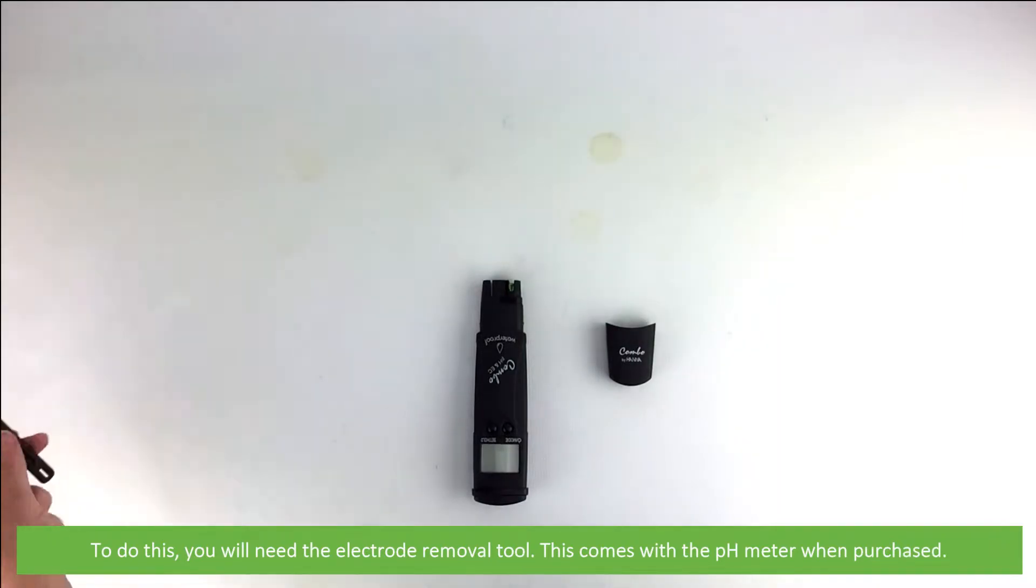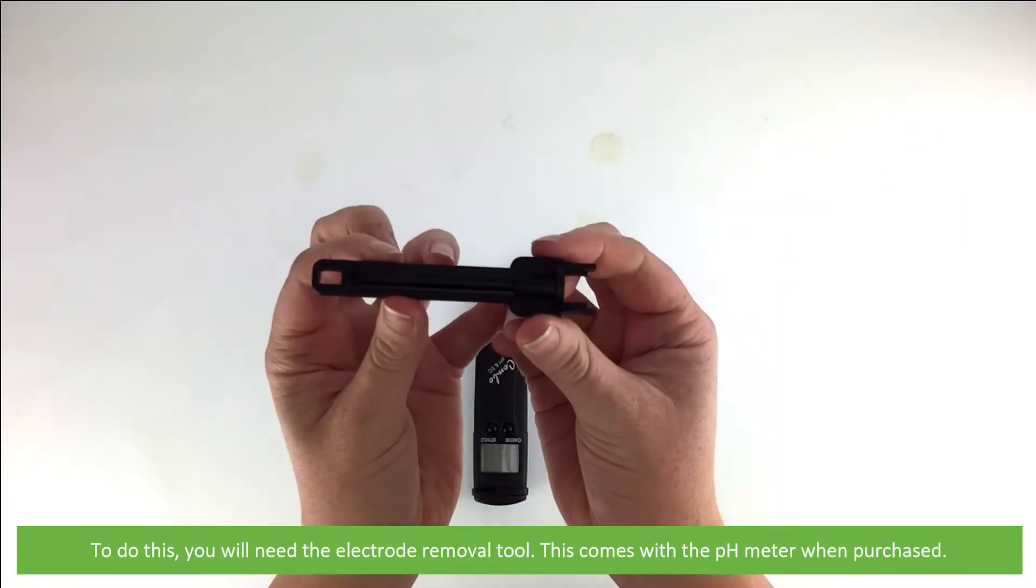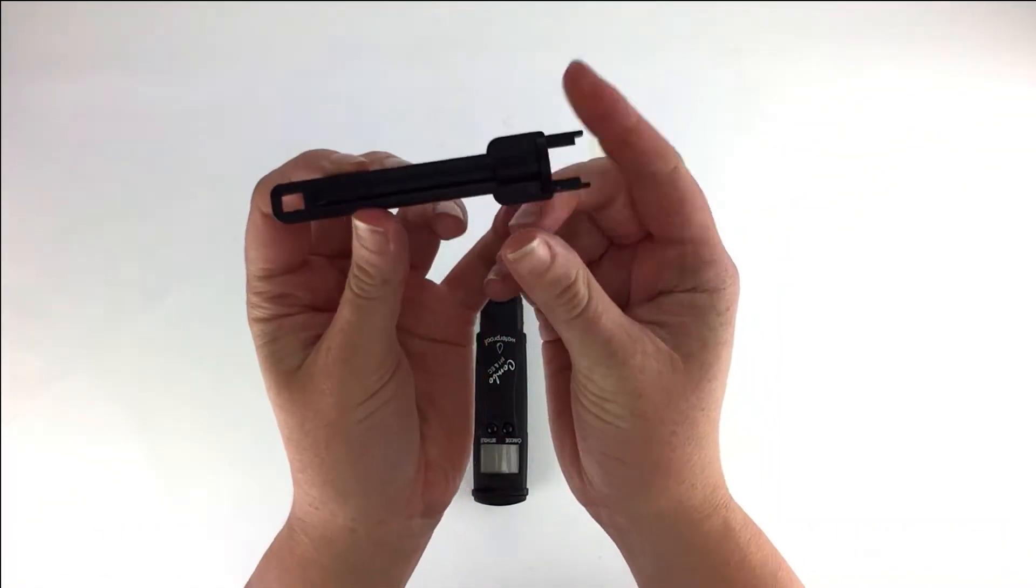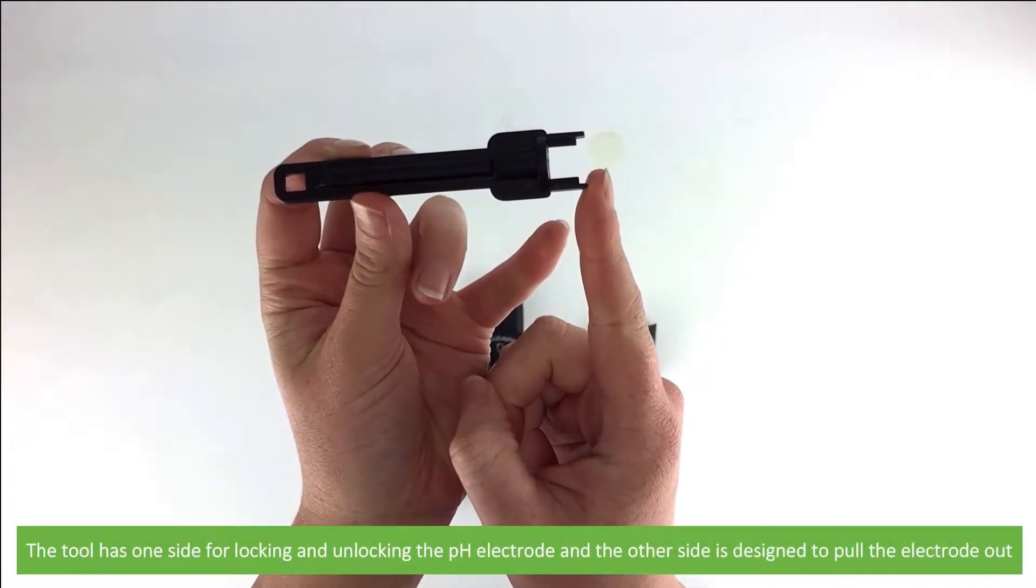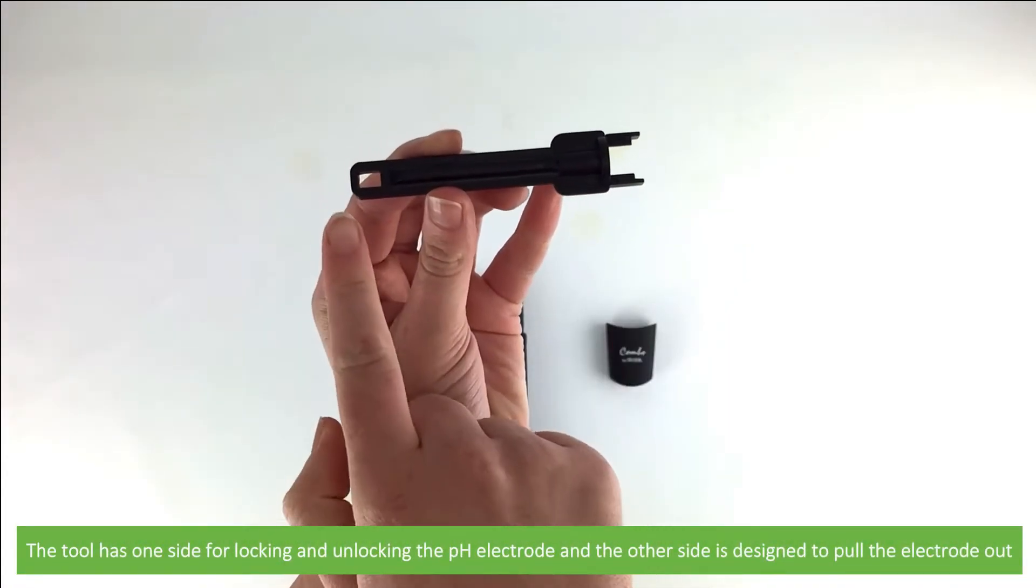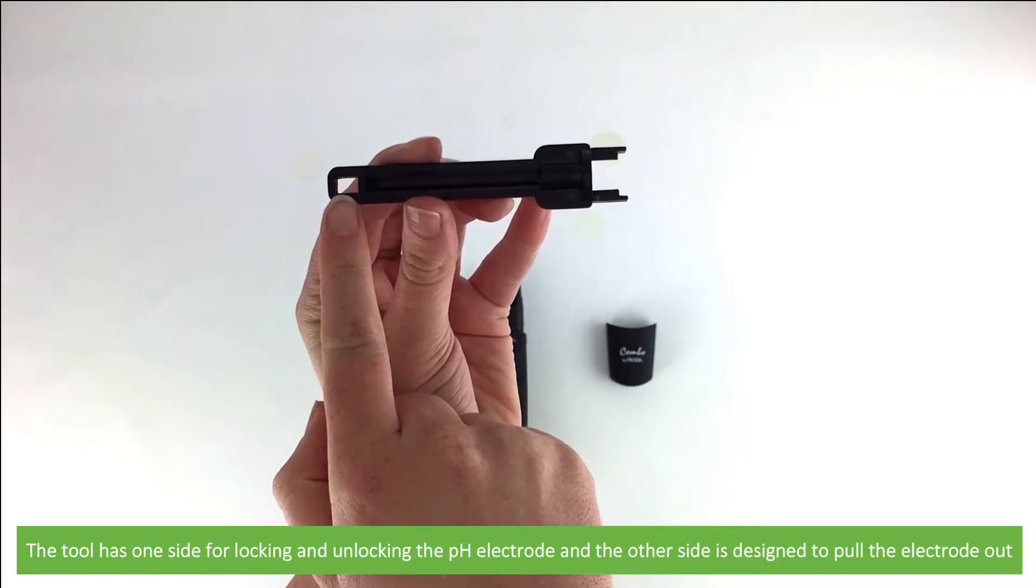To do this you will need the electrode removal tool. This comes with the pH meter when purchased. The tool has one side for locking and unlocking the pH electrode and the other side is designed to pull the electrode out.